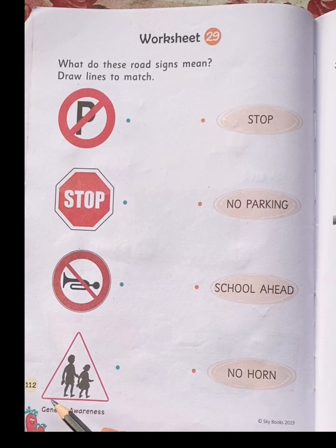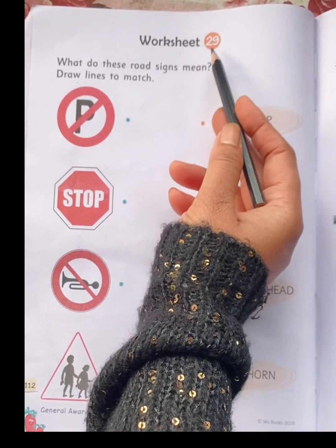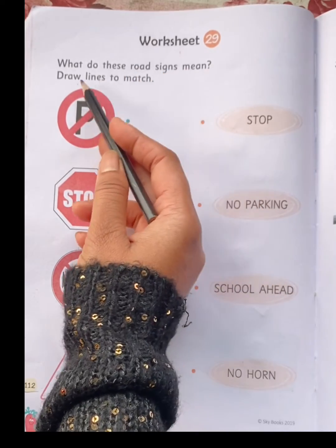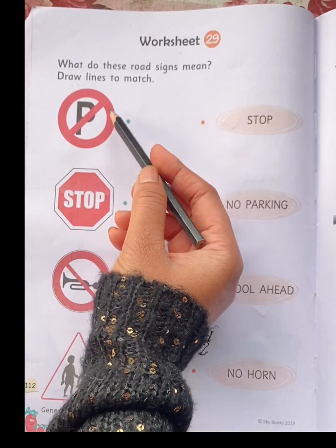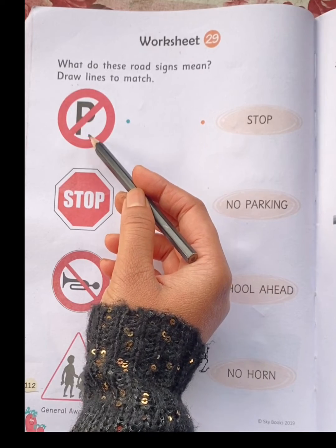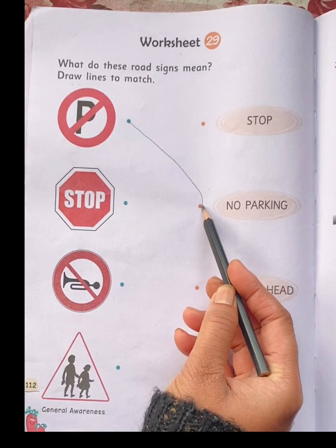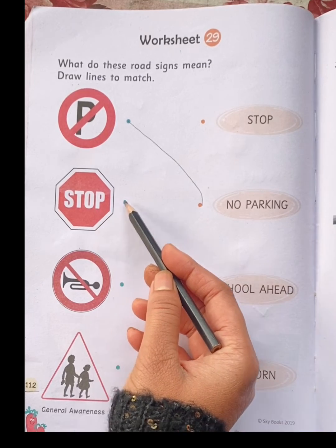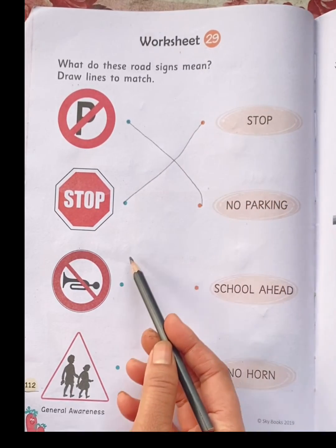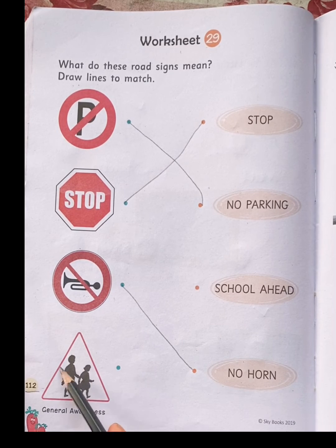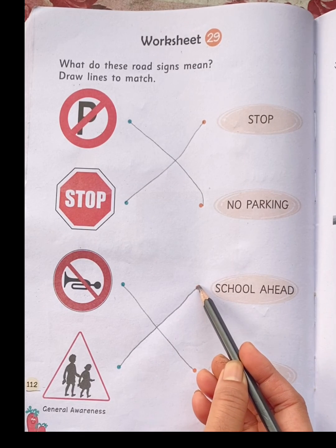Now come to page number 112, worksheet 29. What do these road signs mean? Draw lines to match. See the first sign — this sign means no parking. This sign means stop. This sign means no horn. See the last sign — this sign means school ahead.